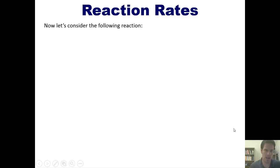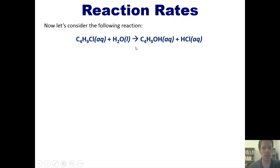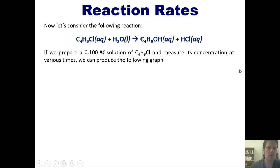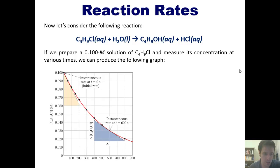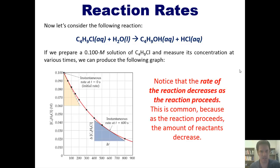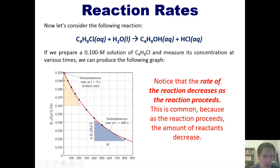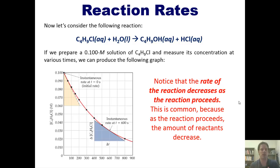Now let's consider the following reaction: butyl chloride reacts with water to form butanol and HCl. If we prepare a 0.1 molar solution of butyl chloride and measure its concentration at various times, we can produce a graph. Notice that the rate of the reaction decreases as the reaction proceeds forward, starting at a concentration of 0.1 molar butyl chloride. The slope of this line decreases over time because as the reaction proceeds, the amount of reactants decreases, allowing fewer and fewer reactants to convert into products.